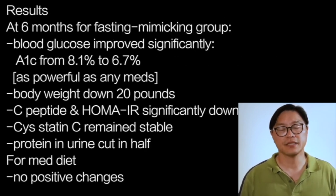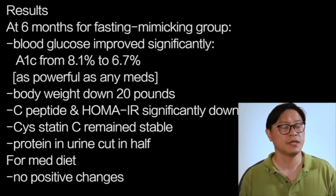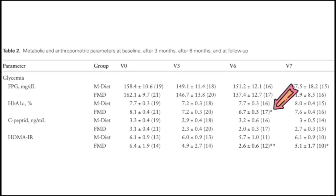At six months, the results were very impressive. Blood glucose improved significantly. In the group that received the fasting-mimicking diet, hemoglobin A1C went from 8.1% to 6.7% — a very impressive reduction, as powerful as any medication on the market today, and yet achieved with diet alone. In the Mediterranean diet group, there was practically no difference in A1C, going from 7.7% to 7.7%.